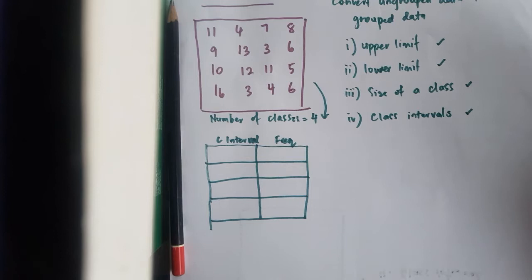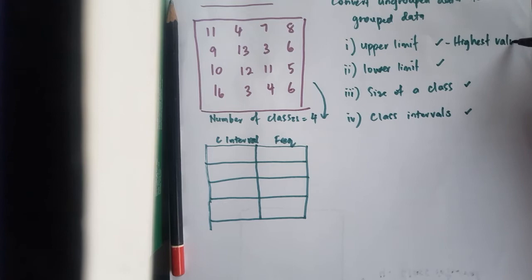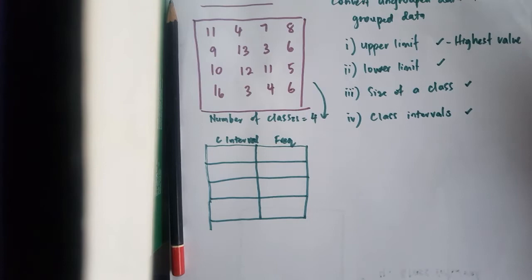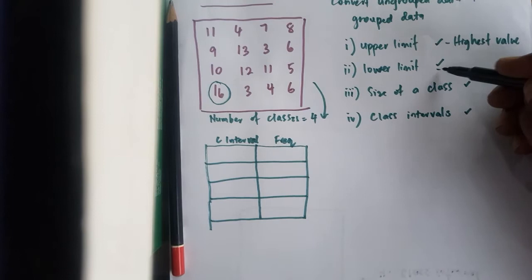So what you need to do now is to identify your upper limit and your lower limit. Now in this table, upper limit means the highest value. So the highest value in this given data is 16.